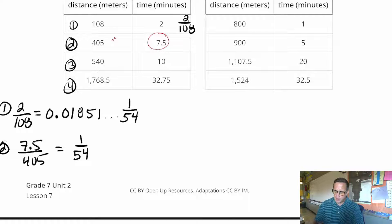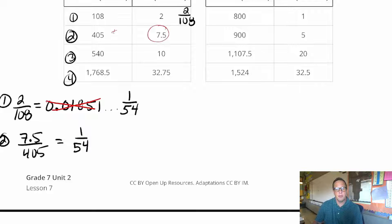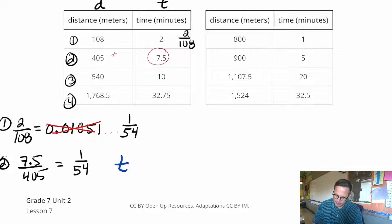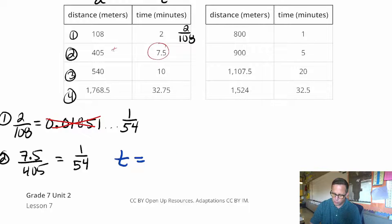Because I really don't want to use this long repeating decimal for our constant proportionality when we write it up. So for that one, what we can say here is that the equation is going to be T, that's like our Y value, right? T equals, and you're going to put your constant proportionality here, and you're going to put that next to distance D. So our constant proportionality is 1 54th D. There you go.